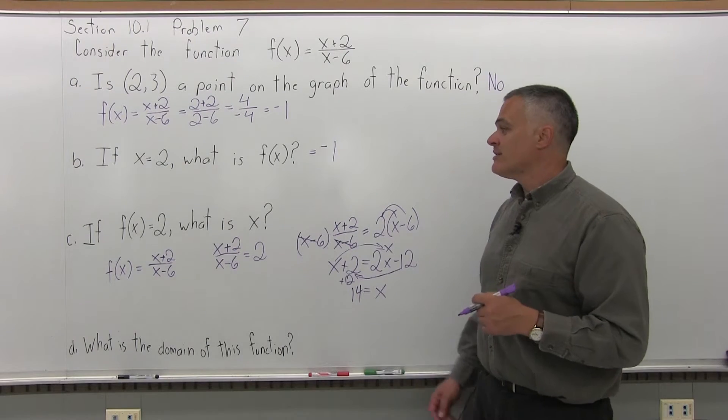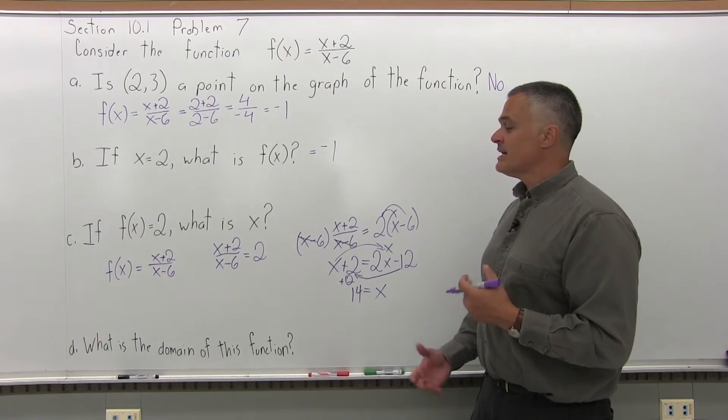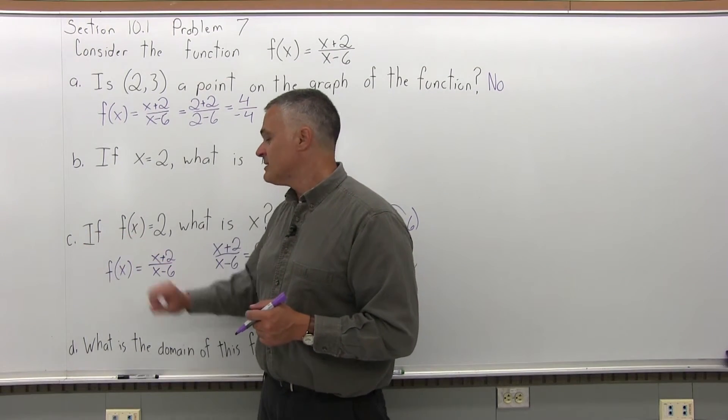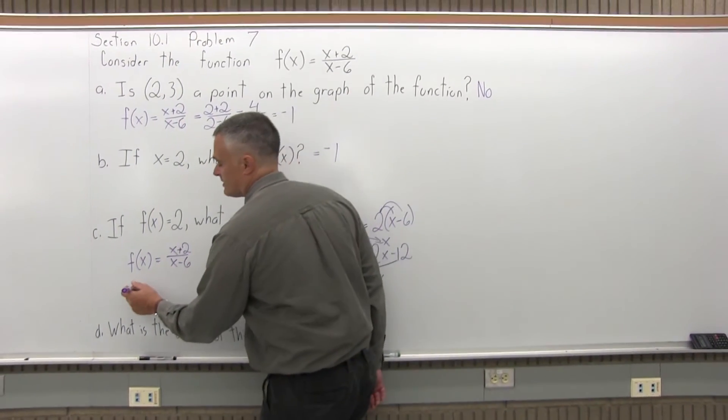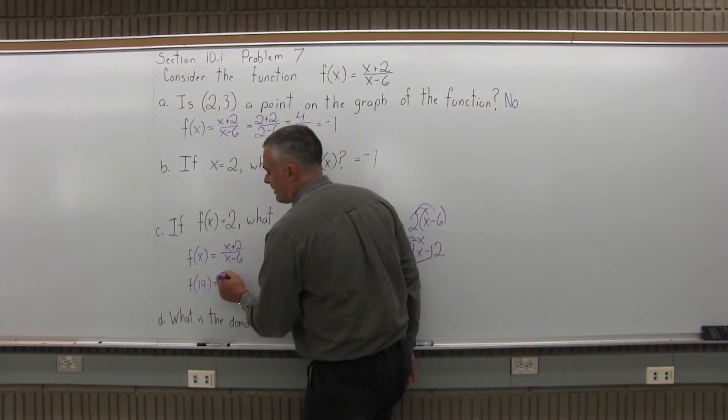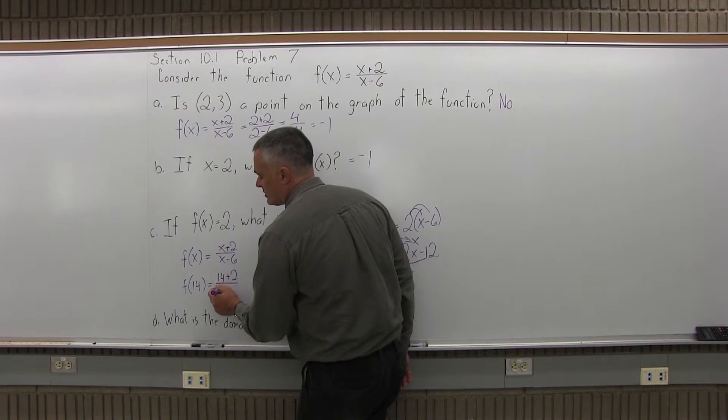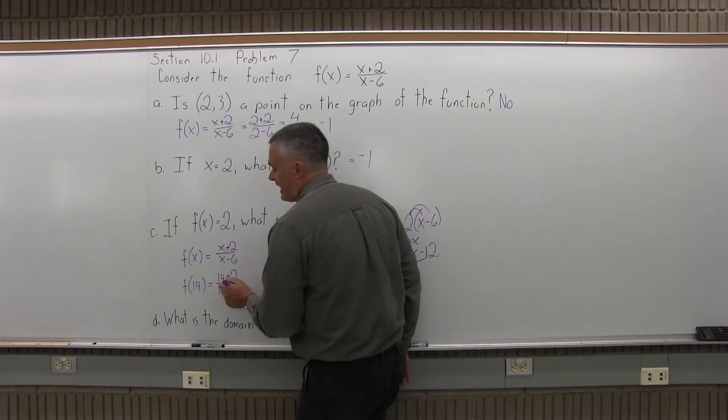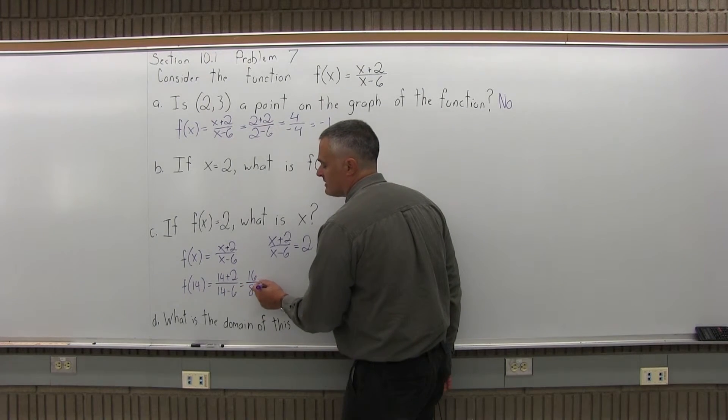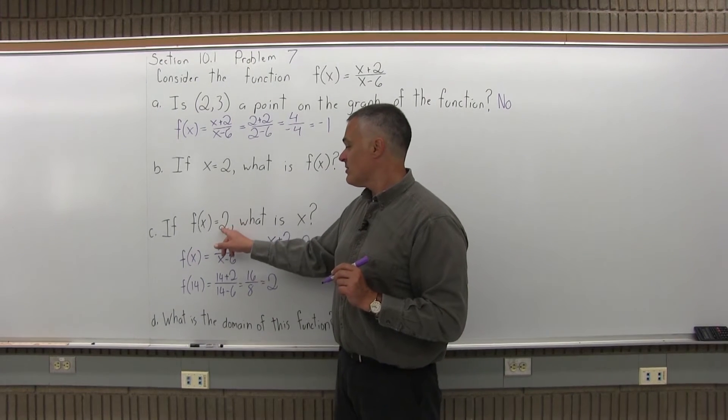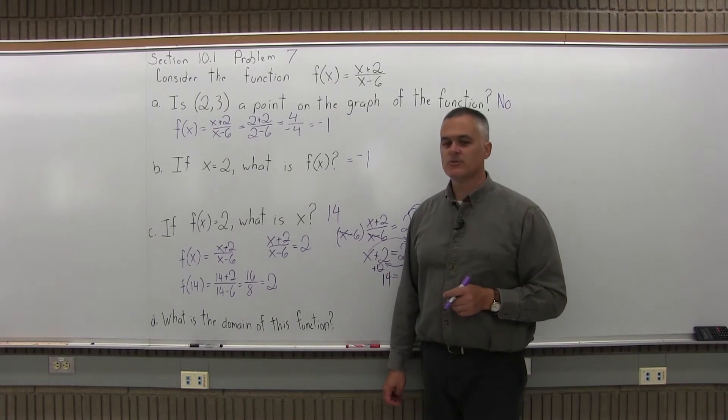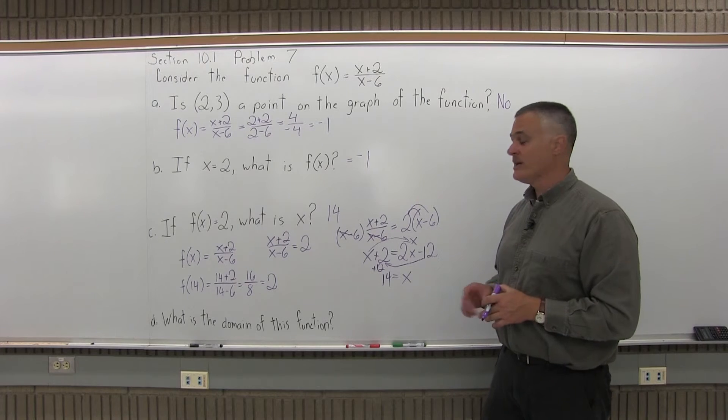So, if I did the math right, in order to get out a 2, I must have put in a 14. And what's nice about this type of math is you can check it. Let's put in a 14 and see if we get out a 2. The f(x) will become f(14). The x plus 2 on top will become 14 plus 2. The x minus 6 in the denominator will become 14 minus 6. In the top of that fraction, 14 plus 2 is 16. In the bottom of the fraction, 14 minus 6 is 8. 16 over 8, sure enough, it reduces to 2. So, if I got out a 2, I must have put in a 14. The answer to part C is 14. And again, you'd eventually get that with some trial and error, but this is the more mathematical way. And it's quicker, too.